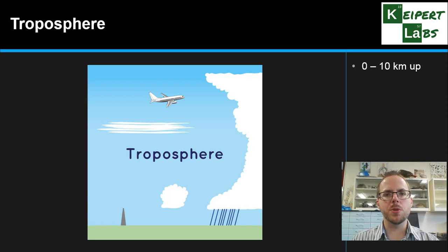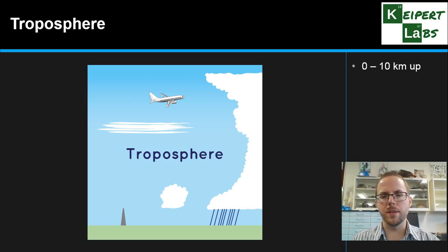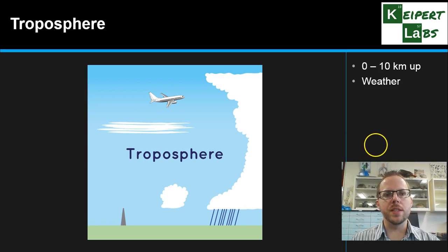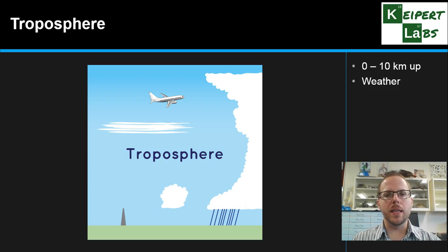The troposphere is somewhere between 0 and 10 kilometres in altitude. It varies depending on exactly where you are on Earth and what the landforms are like — different at Mount Everest versus here in Coffs Harbour, for example. The troposphere is where we have all of our weather events: clouds, wind, and so on, because it's by far the densest layer, with most of the air particles found here.